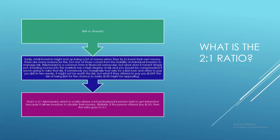The two-to-one ratio is all about risk versus reward. Sadly, many investors lose money due to their inability to manage risk. Risk over reward is a common term in financial services. Simply put: if someone you marginally trust asks for a $50 loan and offers to pay you back $100, the risk of losing $50 for the chance to make $100 might be appealing — that's two-to-one risk versus reward. If they offered $150 back, that ratio goes to three-to-one.